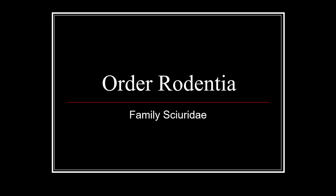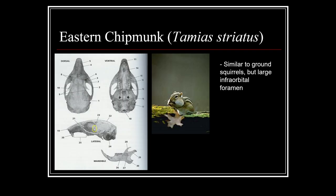Within Order Rodentia, our first family is Sciuridae — our squirrel species. Our first species is the eastern chipmunk, Tamias striatus, a very easy species to identify. It's our only chipmunk species within this region, and it has that clear stripe pattern down the back.